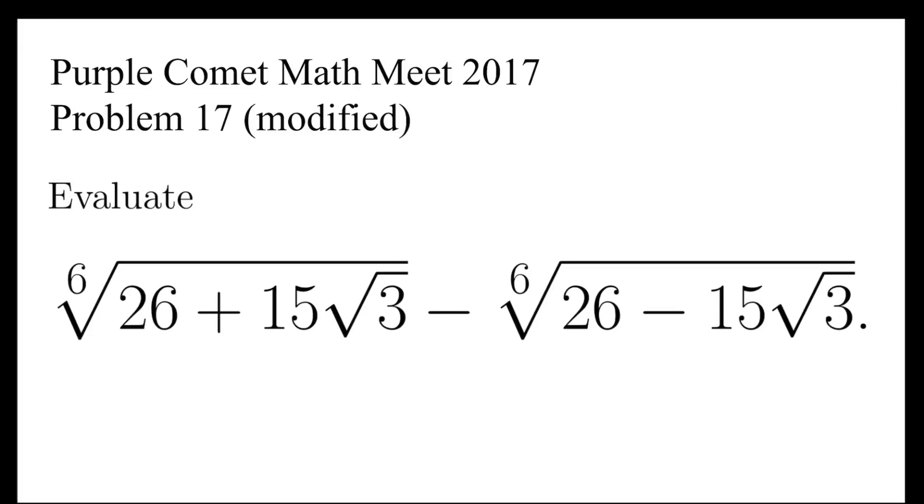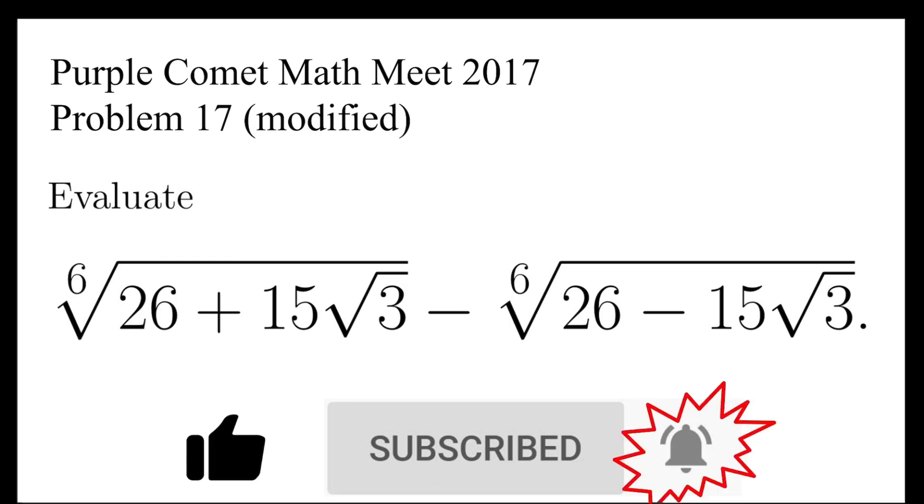Let's take a look at the modified problem from the Purple Comet Math Meet 2017, which is to evaluate the 6th root of 26 plus 15√3, minus the 6th root of 26 minus 15√3. Pause the video, give it a try, and resume when you're ready.